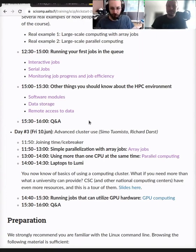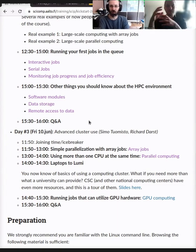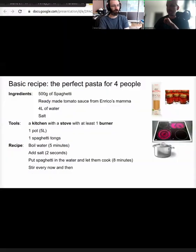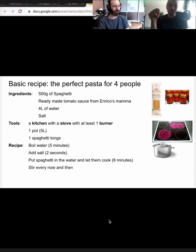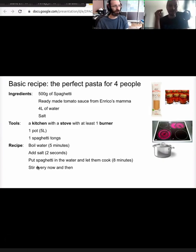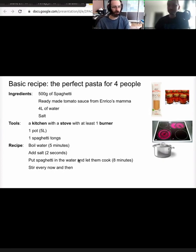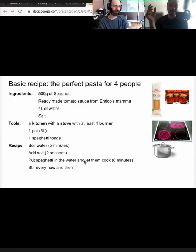About array jobs — before we go to the array jobs, let's go back one step and remember what we did with the serial jobs. We made an instruction, a recipe for our program. We had instructions to the computer itself: what it should do, what program it should do it with, and what kind of data it should read. We told the queue system we want these things done. That's the normal non-interactive serial job that you run.